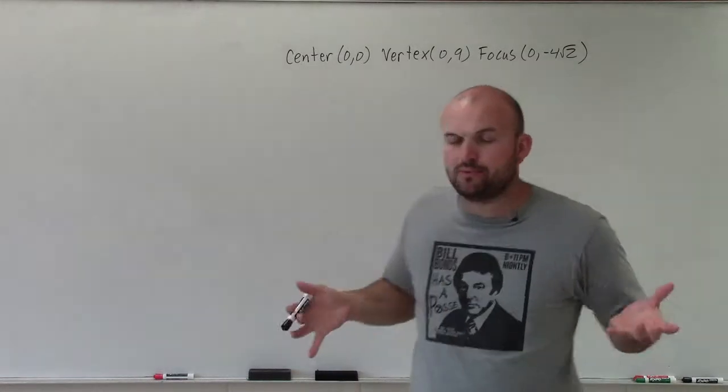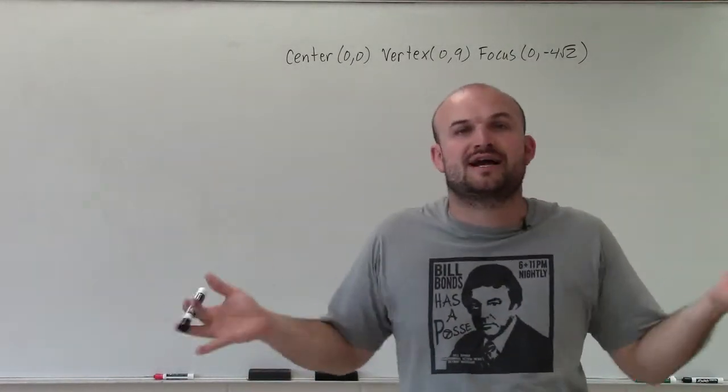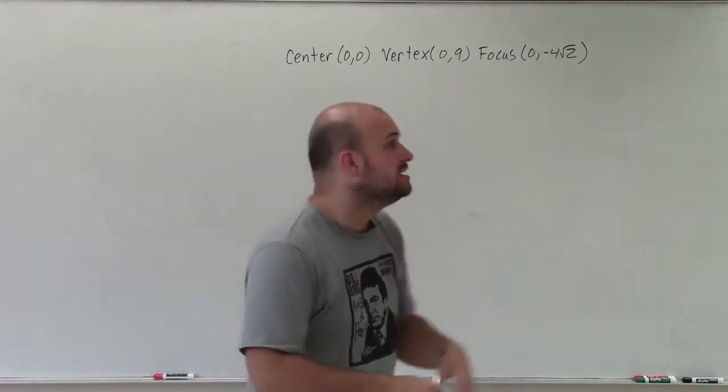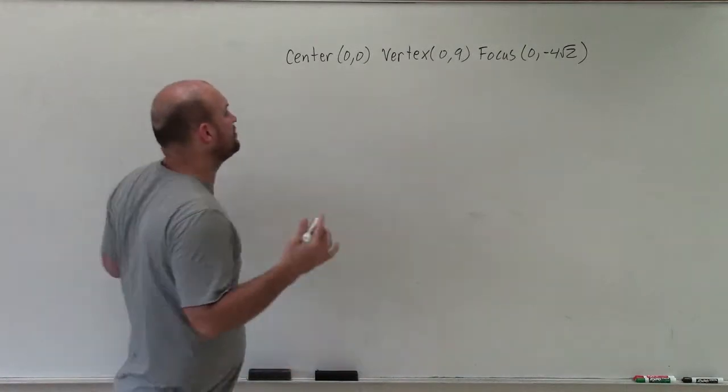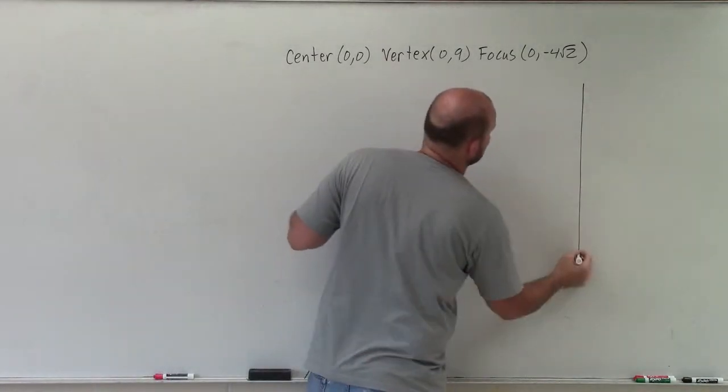So to write the equation of the ellipse, the main important thing we want to do is identify where the major axis is. Is it horizontal or is it vertical? To do that, we want to at least plot the information so we can identify that.